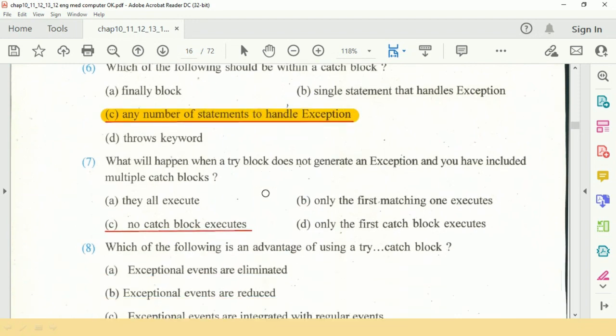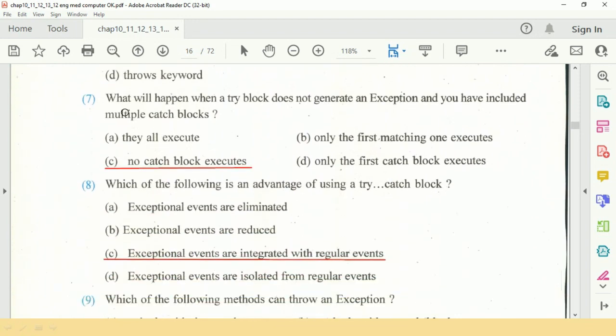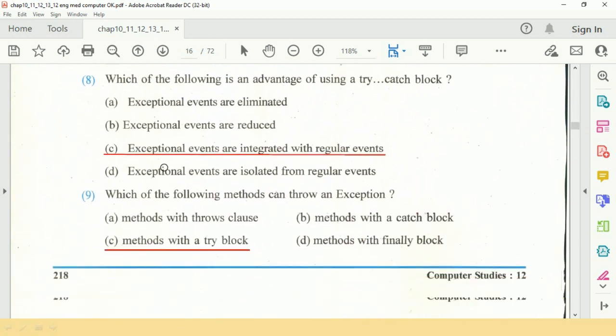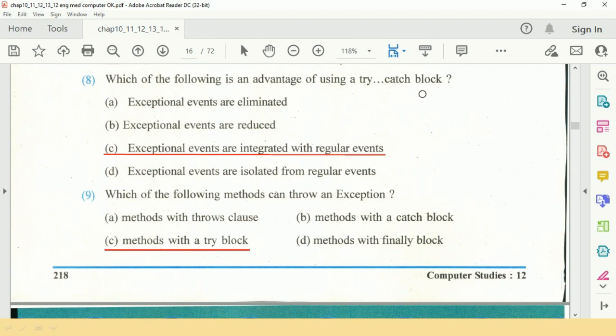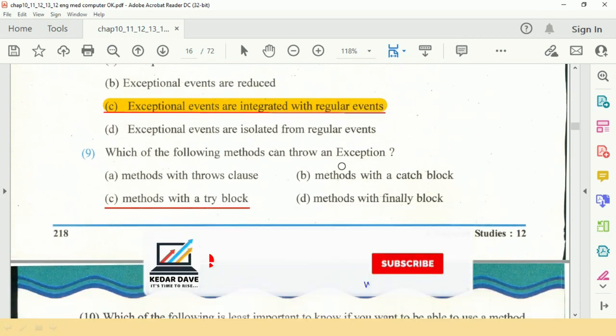Question seven: what will happen when a try block does not generate an exception and you have included multiple catch blocks? Answer: C, no catch block executes. Question eight: which of the following is an advantage of the try and catch block? Answer: exceptional events are integrated with regular events.